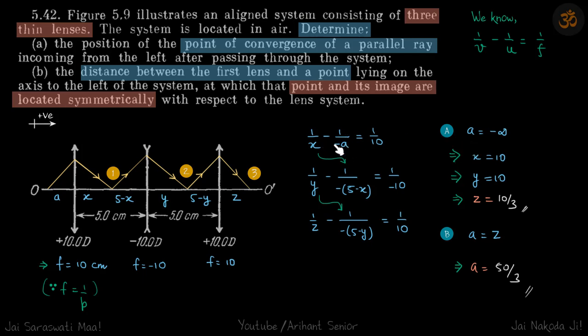So now we put the value of x here which is plus 10. So this becomes 5 minus 10 minus 5, minus minus become positive but there is another minus here. So this goes to the right side. So 1 by y becomes 1 by 5 minus 1 by 10 which comes to be plus 1 by 10.